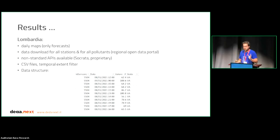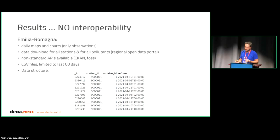The Piemonte region has daily maps with observation and forecast. You can download data only station by station and pollutant by pollutant, and you can make a bulk download, but there's no API available — you just have to go to the web application. Data is available in CSV files with a specific data structure. Lombardia, another region: you can have a bulk download for all stations and all pollutants, and APIs are available, but they are non-standard. Again, data is provided in CSV format, but the data structure is different from the other region. Then Emilia-Romagna, again, different solutions. And then the fourth region, Veneto, did not provide data digitally — at least not a couple of years ago when we started. They provided PDF, and you had to scrape data from PDF.